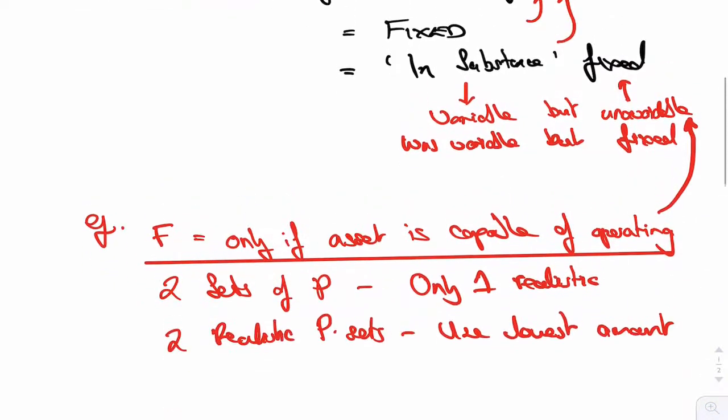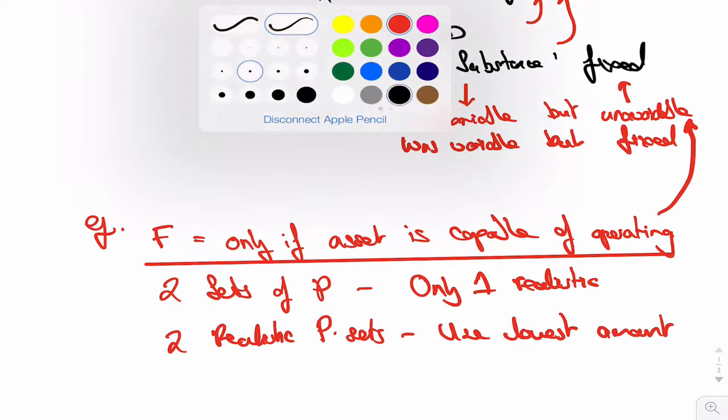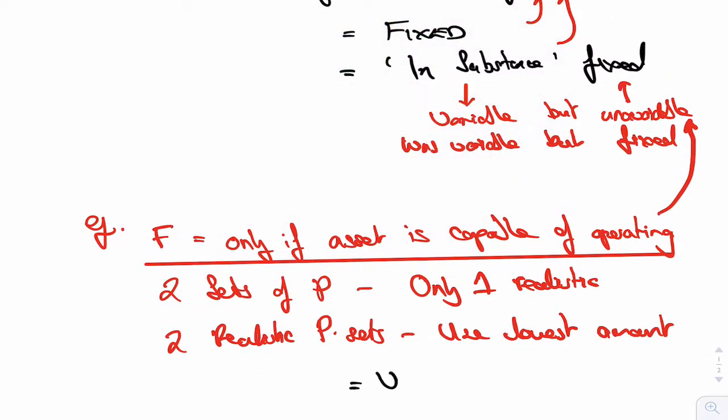And then now what we're going to go on to after that is variable payments. Now, we only include variable payments if they're in-substance fixed, but we only include these ones, proper variable ones, if the variability depends on a rate or an index. So we'll explain that more in the next lecture.